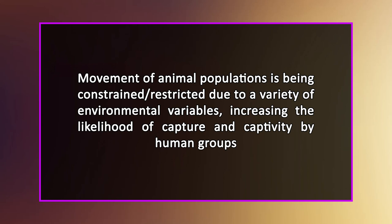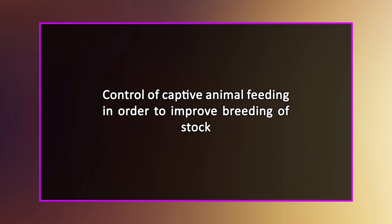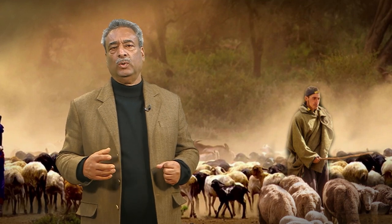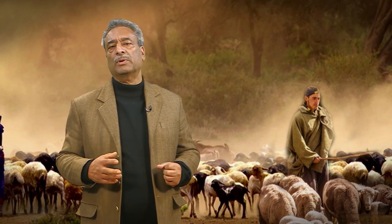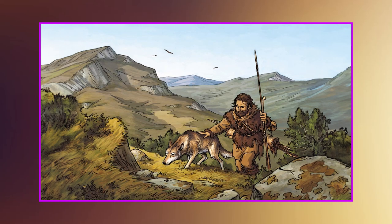These three factors were: the movement of animal populations being constrained or restricted due to a variety of environmental variables, increasing the likelihood of capture and captivity by human groups; possibilities for breeding the animals in captivity, assisting human groups in maintaining an optimal population for regular food consumption; and control of captive animal feeding in order to improve breeding of stock. The archaeological evidence of early animal domestication is both sparse and imprecise — it is generally impossible to distinguish between wild and domesticated animal bones.